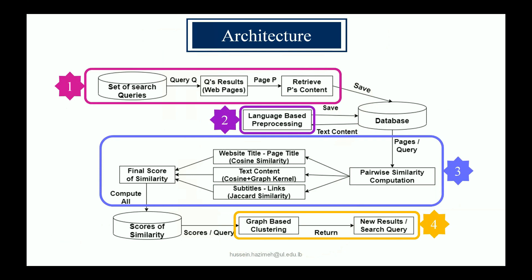In this diagram, we start with a set of queries, get the results, then perform pre-processing. In step three, we perform the similarity algorithms — for text content, links, and website titles, we employ the corresponding compatible similarity algorithm — and finally arrive at a final similarity score. This final similarity score serves as input for step four, the clustering phase.